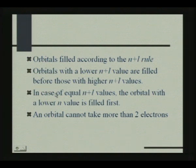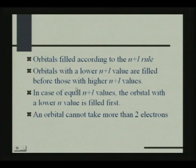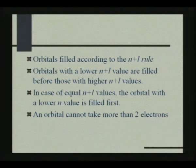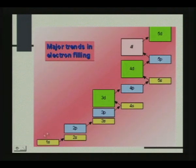What happens when two orbitals have the same n+l value? Take the case of 5s and 4p. For 5s, n+l = 5+0 = 5. For 4p, n+l = 4+1 = 5. So which is filled first? Obviously the one with lower n value, that is 4p. This is the n+l rule — you can see the order: 1s, 2s, 2p, 3s, 3p, 4s, 3d, 4p, then 5s. So 4p is filled before 5s.